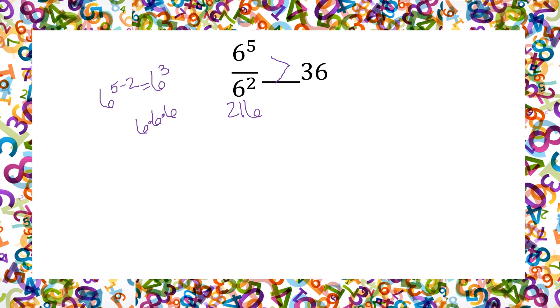You could have also rewritten 36 as 6 squared and said 6 to the 3rd is greater than 6 squared. Either way works — just do whichever one is easier for you.